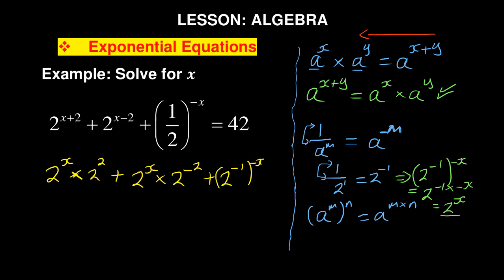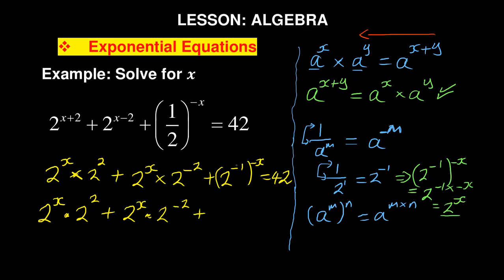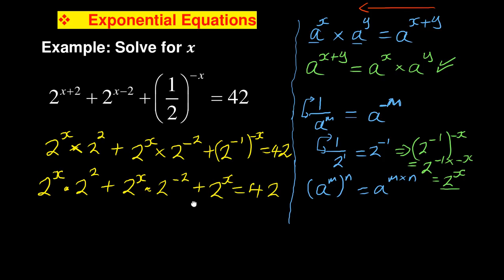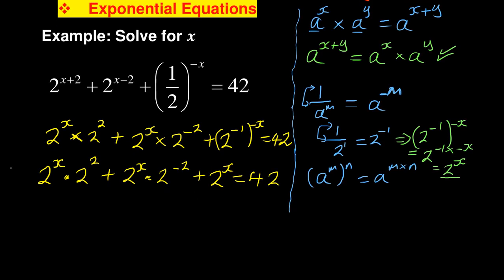So the full expanded equation is now: 2 to the power of x, times 2 to the power of 2, plus 2 to the power of x, times 2 to the power of negative 2, plus 2 to the power of x, equals 42. Your calculator will come in handy at the next stage.